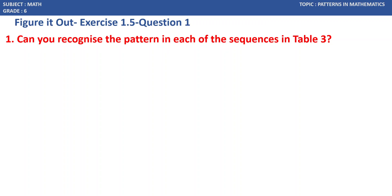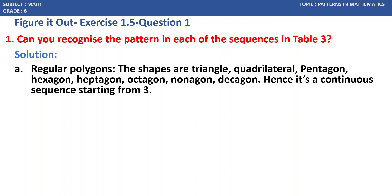Exercise 1.5, question number 1. Can you recognize a pattern in each of the sequences in table 3? Table 3, first one is regular polygons. The shapes are triangle, quadrilaterals, pentagon, hexagon, heptagon, octagon, nonagon, decagon. Hence, it is a continuous sequence starting from 3.